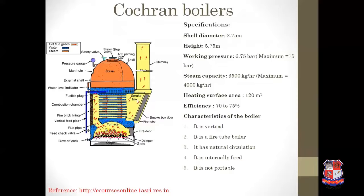The Cochrane boiler consists of a vertical cylindrical shell. At the bottom of this cylindrical shell, a firebox is provided. Inside this firebox, a grate is provided, and below this grate there is an ash pit. On the upper side of this grate, coal is supplied by opening the fire door. At the top of the firebox, a short flue pipe is provided, so hot gases passing through this flue pipe experience a considerable increase in velocity.